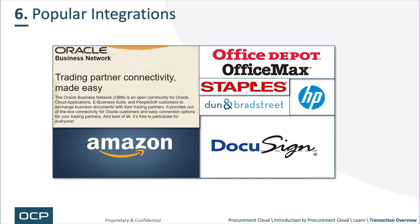Here are a few popular integrations. OBN is an integration — we'll talk about that shortly. Amazon, on the more complex side of punch-outs. And then you have a lot of other punch-outs: Office Depot, Staples, Dun & Bradstreet, HP, corporate graphics, and any number of others. What is probably one of the slickest integrations is DocuSign — very nicely done for contract signatures.